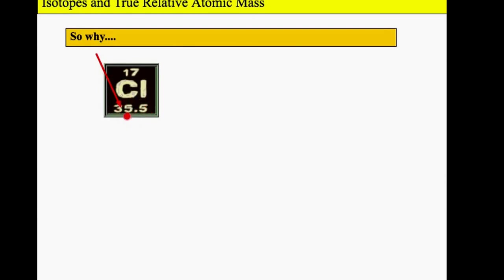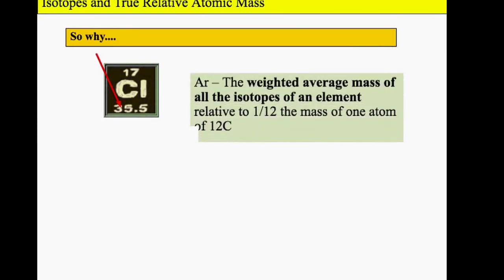This isn't actually the mass number, it's called the relative atomic mass. It's given the symbol capital A little r. The relative atomic mass is the weighted average mass of all the isotopes of an element relative to one twelfth the mass of one atom of carbon-12. The 12 is meant to be superscript, small and to the top left of the carbon. AQA accepts slightly different versions of this definition, but personally I think this explains it the best.